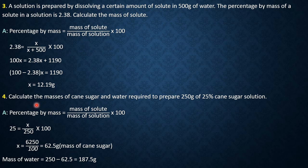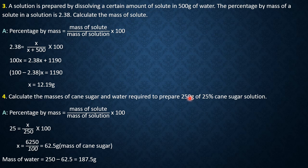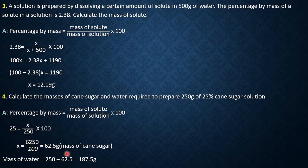Example 4: Calculate the masses of cane sugar and water required to prepare 250 grams of a 25 percent cane sugar solution. Here, 250 grams is the mass of the solution, not the solvent. Using: mass percent = (mass of solute / mass of solution) × 100, we solve for the mass of cane sugar and find the mass of water = 187.5 grams.